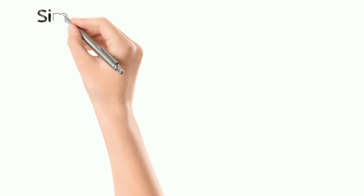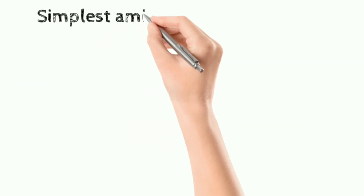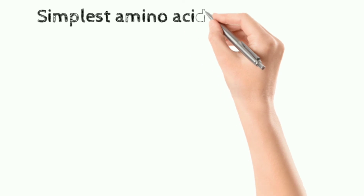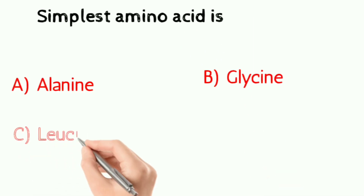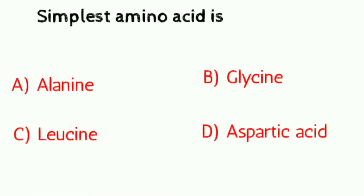Question number eight: the simplest amino acid is — a) alanine, b) glycine, c) leucine, d) aspartic acid. Correct answer is glycine.